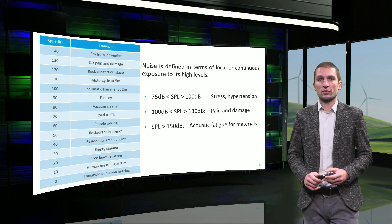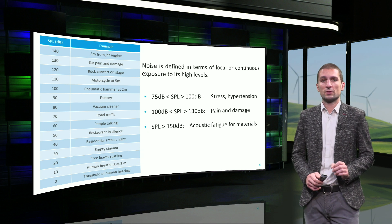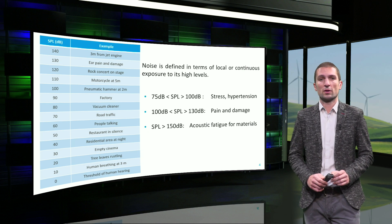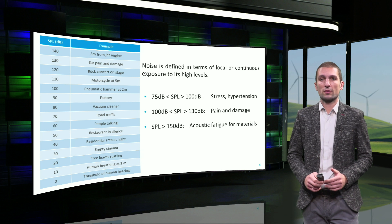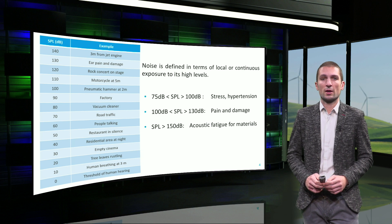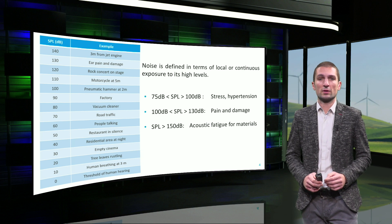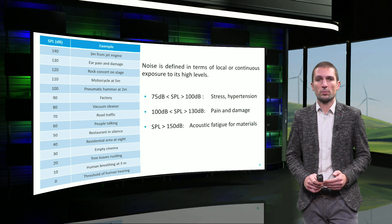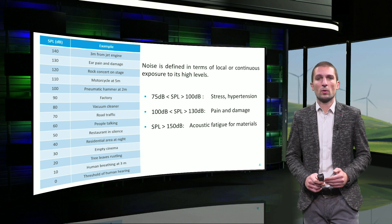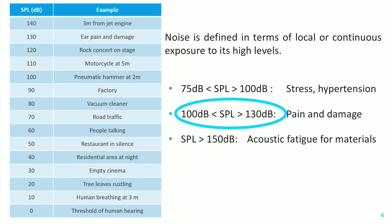We have also seen noise defined in terms of exposure levels. Exposure levels depend on the strength of the source and on its distance to the receiver. A commonly assumed value for the threshold of pain is typically 120 dB, although continuous strong exposure above 75 dB is already problematic.